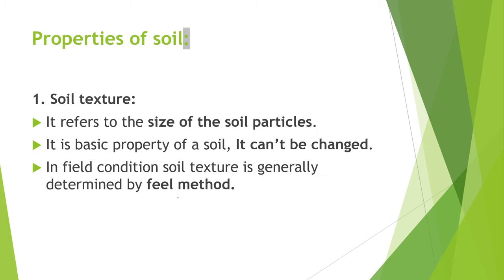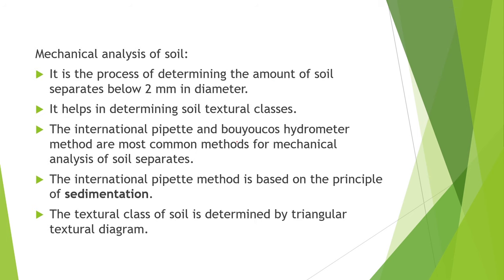The major components of soil: 45% mineral, 5% organic matter, 25% air, and 25% water. Next topic is properties of soil. Soil texture is an inherent property of soil — it refers to the size of soil particles. Mechanical analysis of soil is the process of determining the amount of soil separates below 2 mm in diameter. It helps in determining soil texture classes. The International Pipette and Bouyoucos hydrometer methods are the most common methods for mechanical analysis.